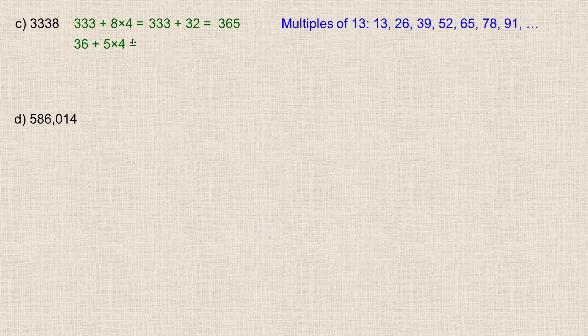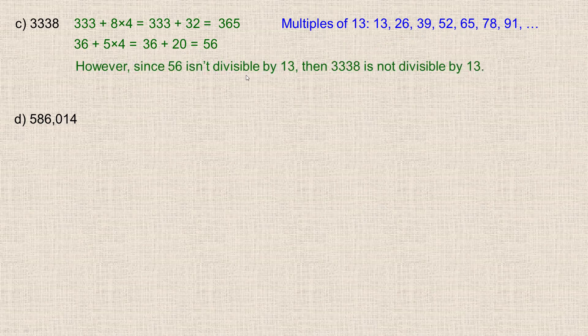So we would next take 36 and add to it 4 times the 5 digit, which is 20. So 36 and 20 add to 56, and looking at our list here, see 56 is not a multiple of 13. It's in between the 52 and 65. So since 56 isn't divisible by 13, then 3,338 is not divisible by 13.